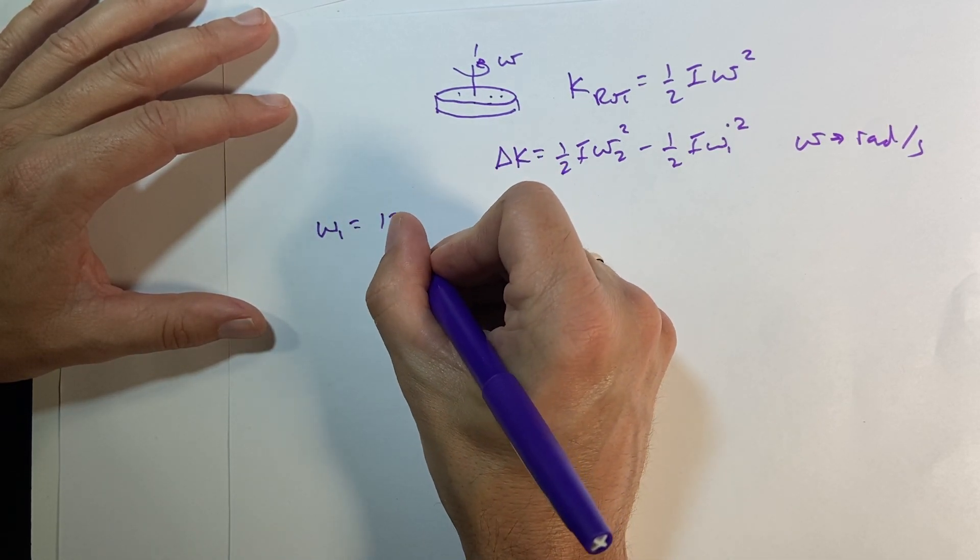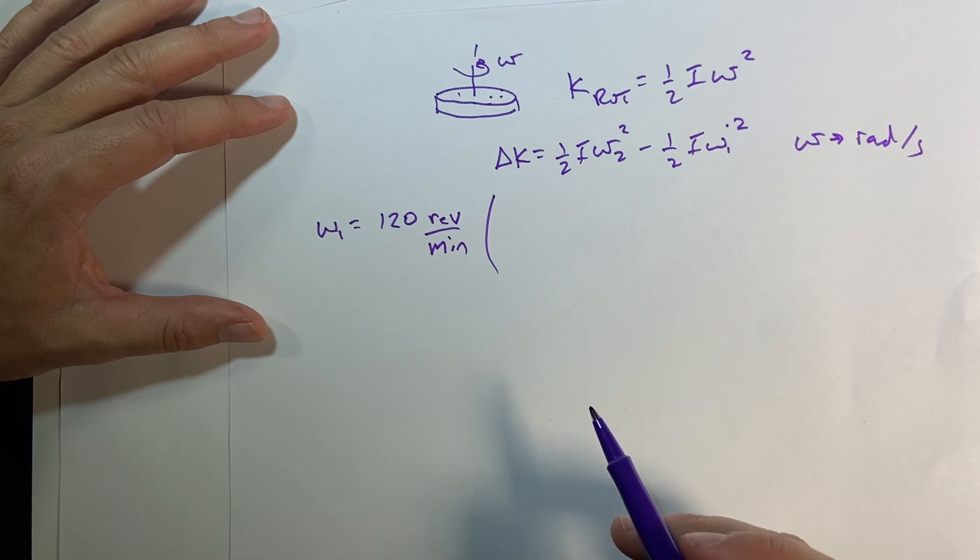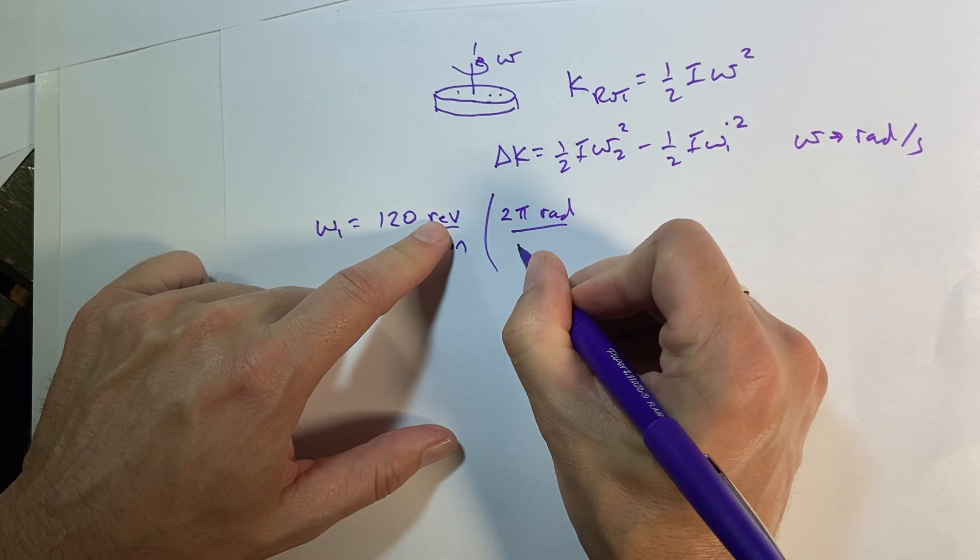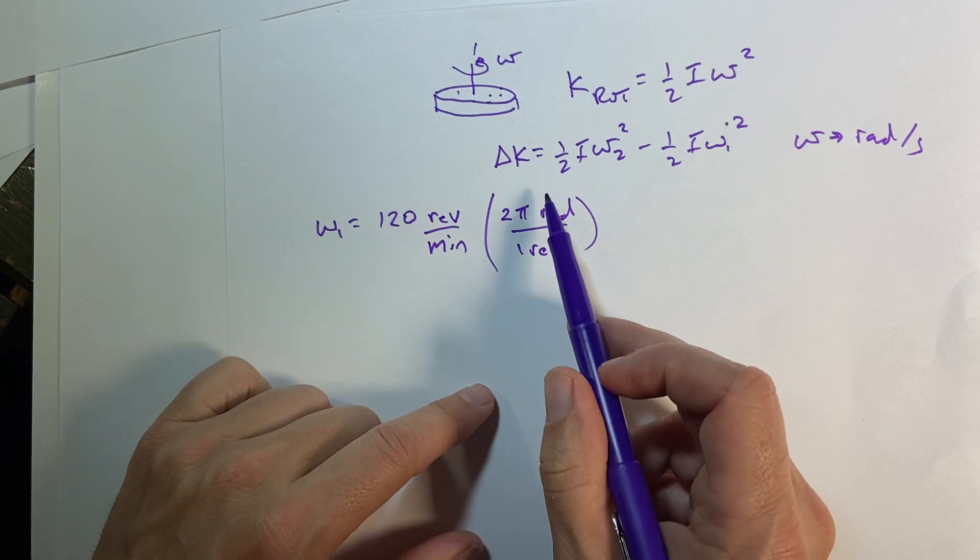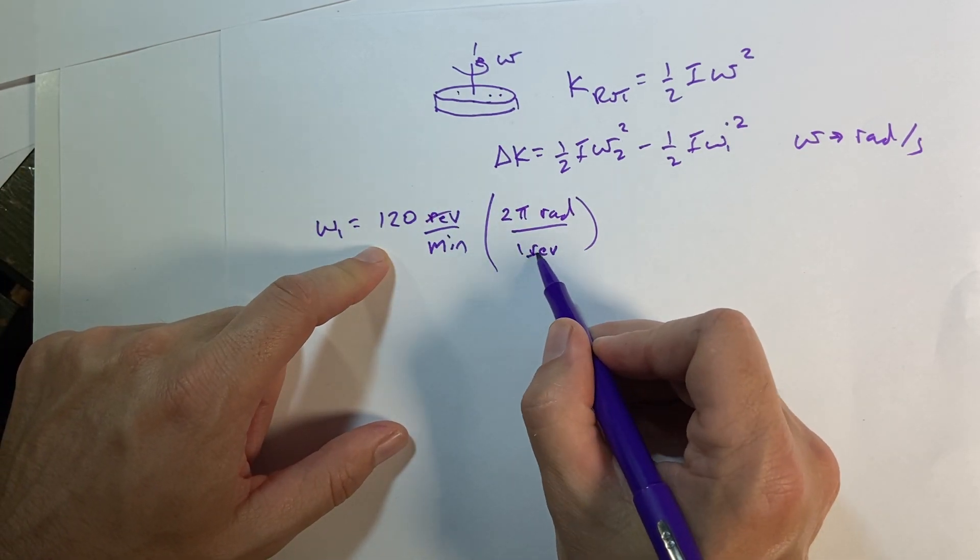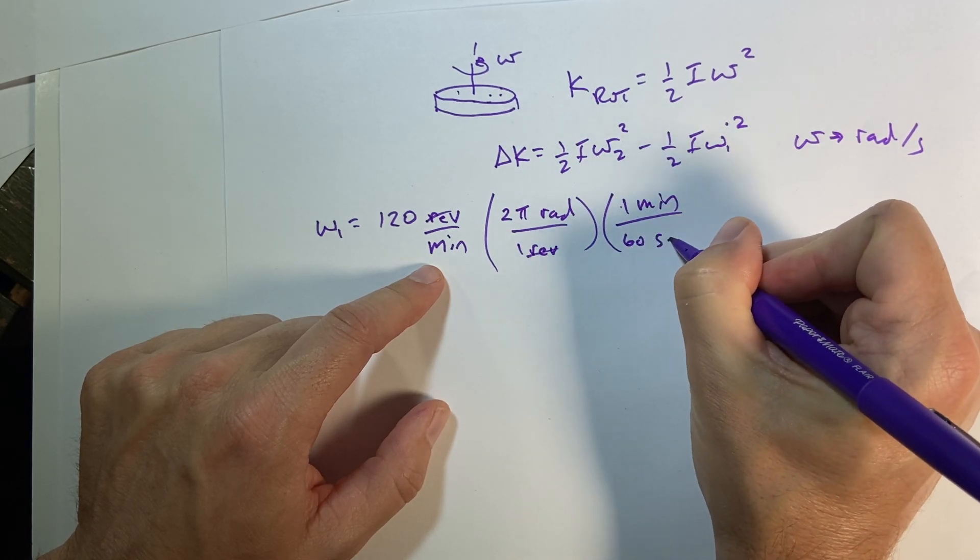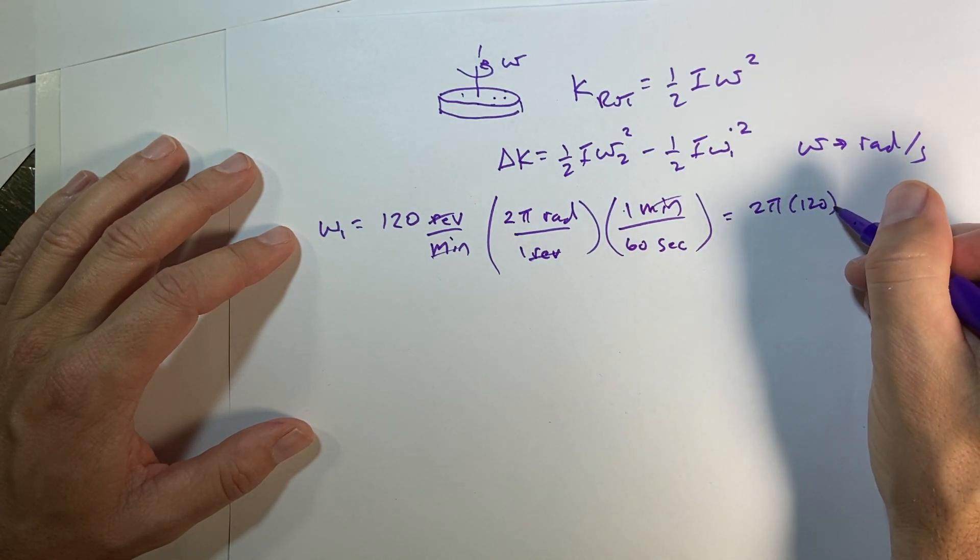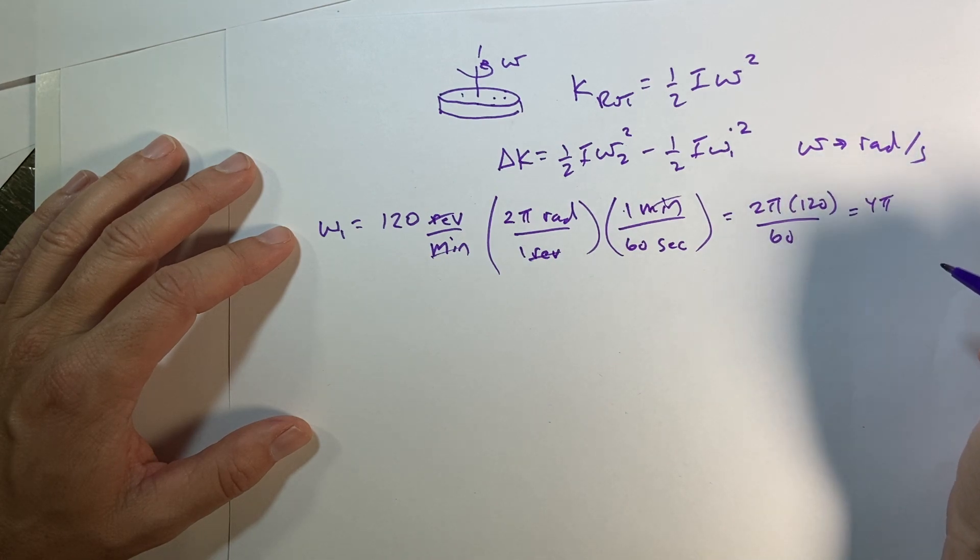So omega-1 is 120 revolutions per minute. Now the key to unit conversion is to multiply by the factor one. So if I want to get rid of revolutions, I can say 2 pi radians is one revolution. If I go around a circle one time, that's 2 pi radians. It's also one revolution. So this is the quantity one, so I can multiply it by this, and it doesn't really do anything. So now the revolutions cancel, and I get 2 pi radians per minute. I can do the same thing with seconds. So I can say one minute is equal to 60 seconds. And then the minutes cancel. So I get 2 pi times 120 over 60. And it just so happens 120 over 60 is 2, so it's going to be 4 pi radians per second.